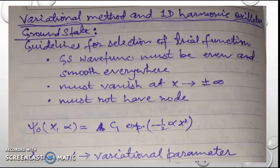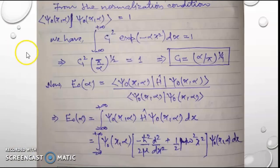We will first consider the ground state. We have to follow certain guidelines for selection of the trial function. The ground state wave function must be even and smooth everywhere, must vanish at x equal to plus and minus infinity, and must not have any node. All these criteria fit well into the Gaussian function, expressed with the variational parameter α as: ψ₀(x, α) = c₁ exp(−½αx²), where α is the variational parameter accounting for the width of the Gaussian, and c₁ is the amplitude.